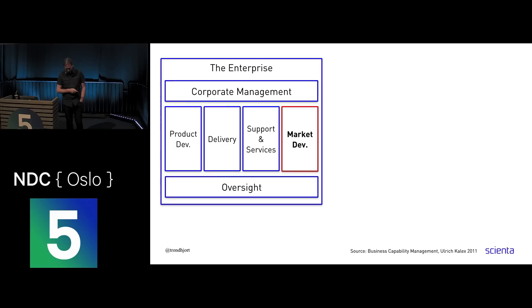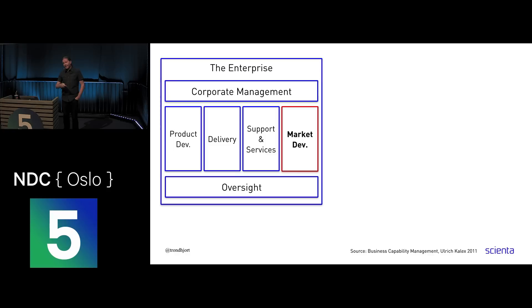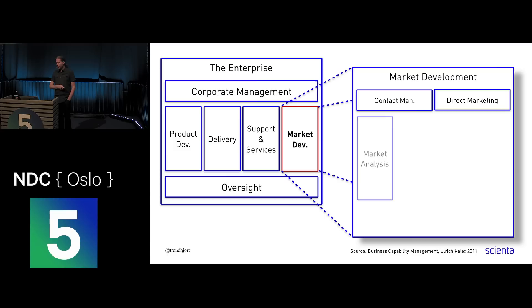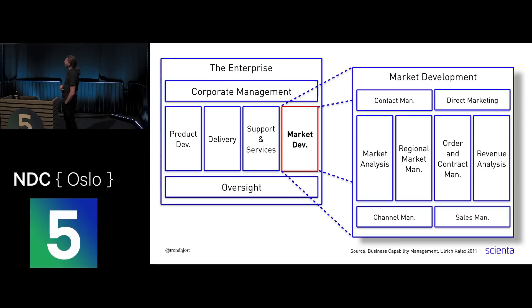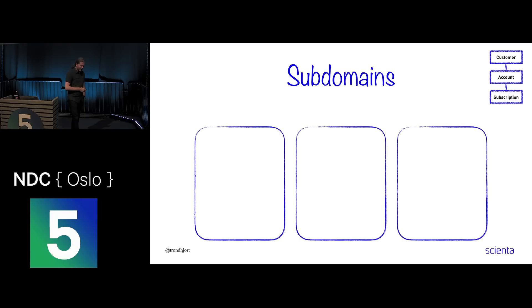A way of finding these domains: some of you may know I have talks on what are called business capabilities. This is one way to find those domains. You can look at the business — what does the business do? Here's a top-level map where we have the enterprise: it has corporate management, product development, delivery, supporting services, and market development. Those could be domains. At least it's somewhere to start, and you can break this down further — market development is also constructed by different capabilities, breaking down three or four levels.